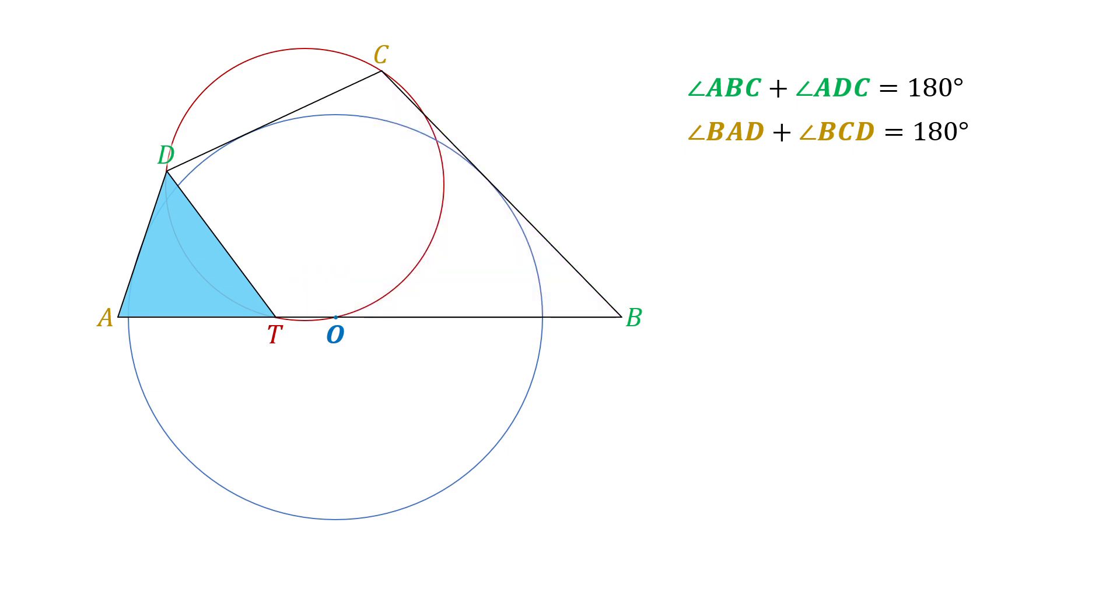In triangle ADT, the sum of all interior angles is 180 degrees. In cyclic quadrilateral ABCD, the sum of angle TAD and BCD is 180 degrees. Therefore, we have angle ADT plus angle ATD equal angle BCD.